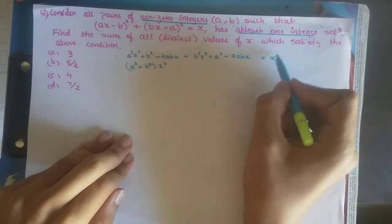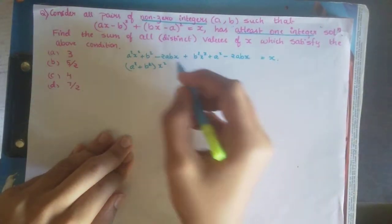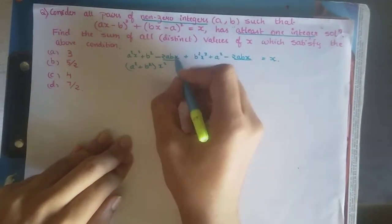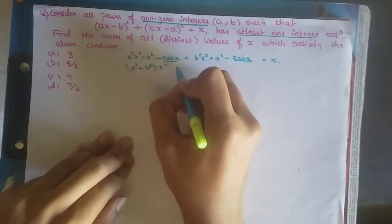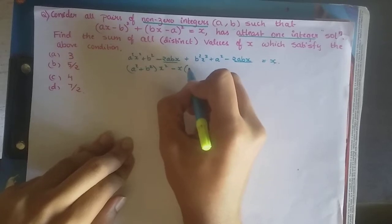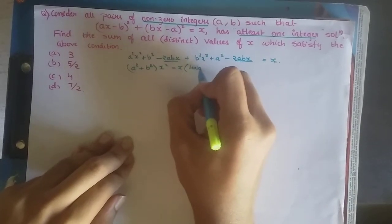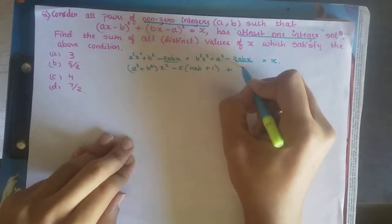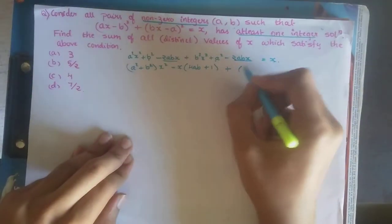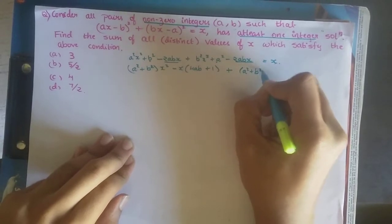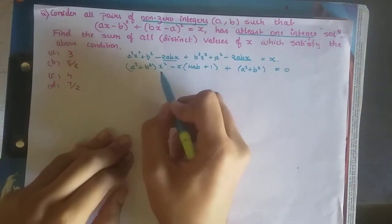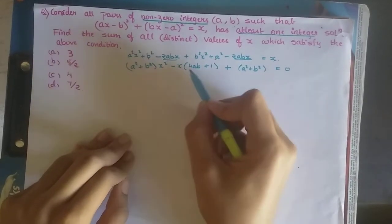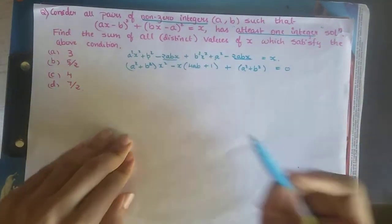Taking x² common gives (a² + b²)x². For the x terms, we have −4abx − x, so factoring out −x gives −(4ab + 1)x. The constant term is a² + b². So we get (a² + b²)x² − (4ab + 1)x + (a² + b²) = 0, which is a quadratic equation in x of the form Ax² + Bx + C = 0.